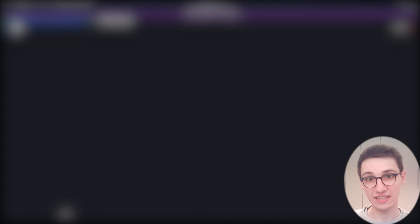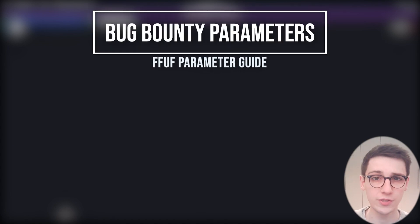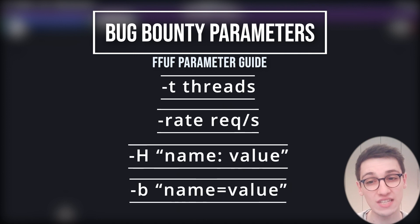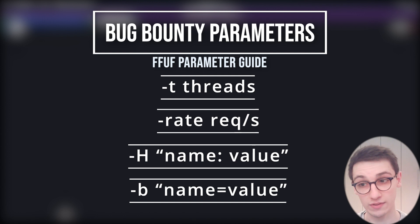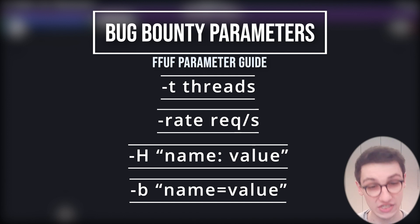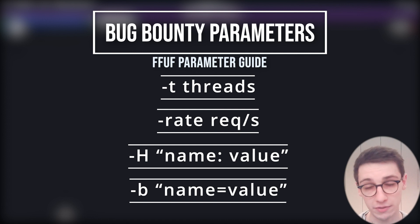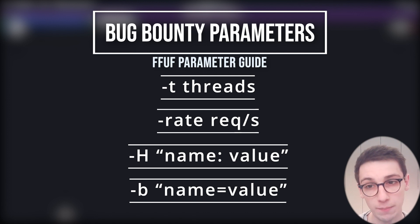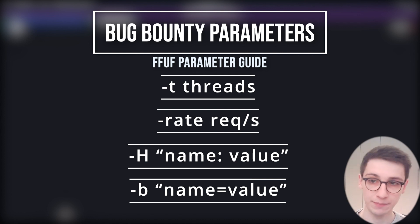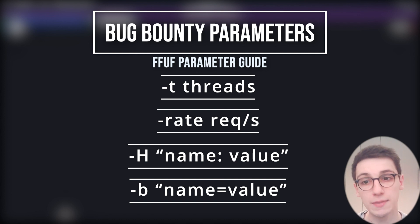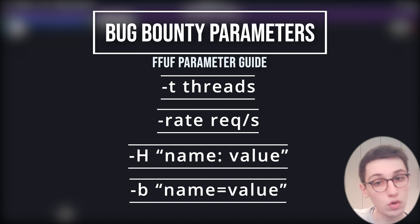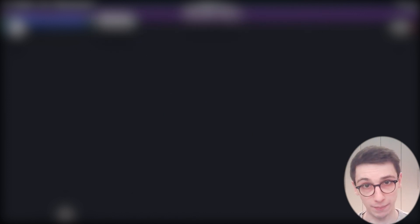There are also what I like to call bug bounty options — options to adhere to the rules of a program. These include -t for the number of threads and --rate for the rate of requests per second, because you don't want to overload a program's server. You can also set -H to inject a header value into every request, and -b to set cookies in the format cookie-name=value.